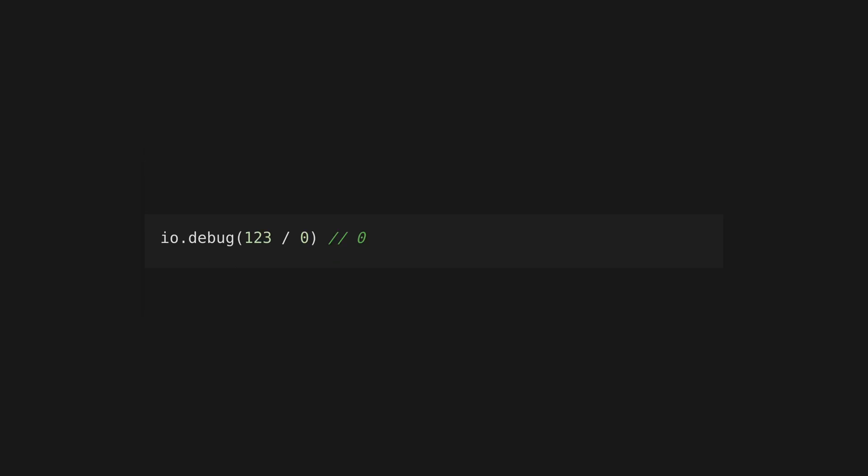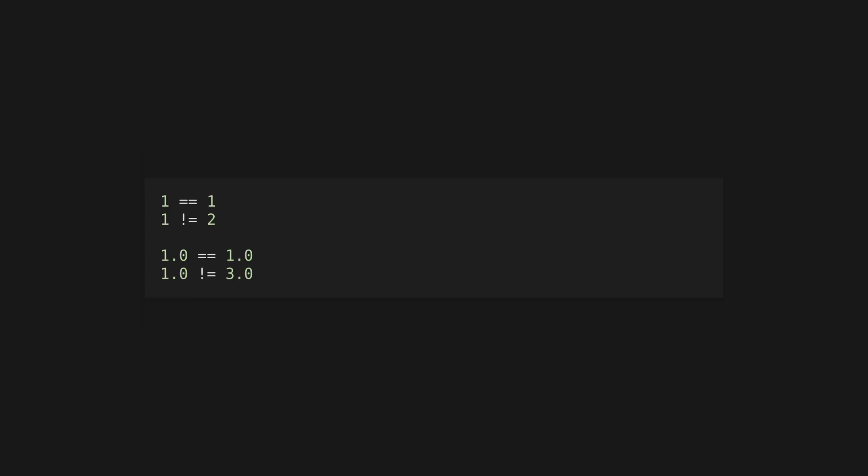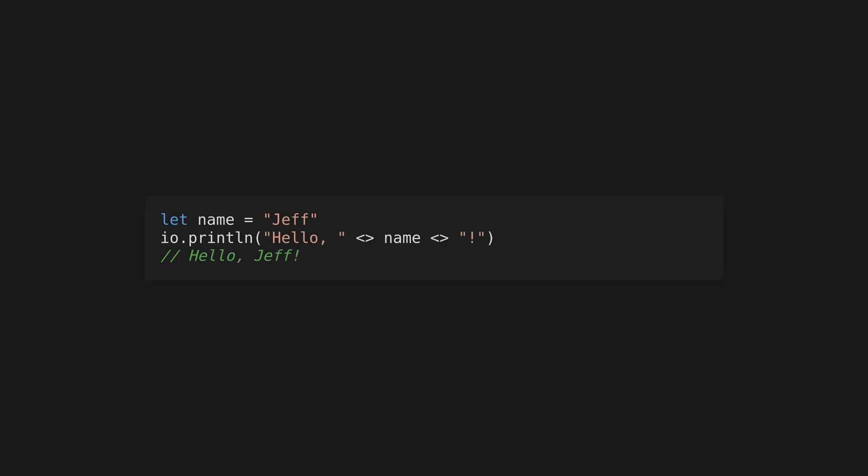Gleam int values use all the standard operators for common mathematical operations, including comparison operators. Instead of panicking, division by 0 is defined to be 0. Floats use the same operators suffixed by a dot, except for equality operators which are the same for all types. There is no modulo operator for floats. Boolean operators are all as expected. Concatenate strings with a concatenation operator.